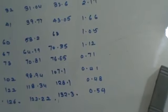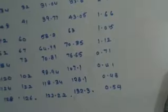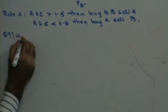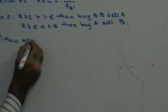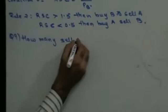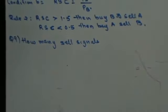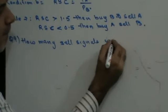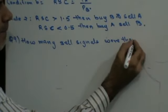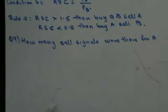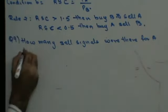Now that we have all this data, let's solve the questions. Question 9: how many sell signals were there for A using Rule 1?